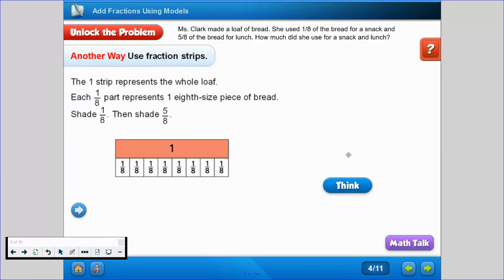Let's look at it another way. Another way is we could use fraction strips. The one strip represents the whole loaf of bread. Each 1/8 part represents 1/8 piece of bread. We're going to shade 1/8, then we're going to shade 5/8.